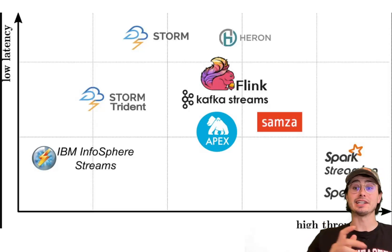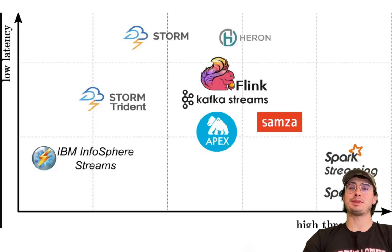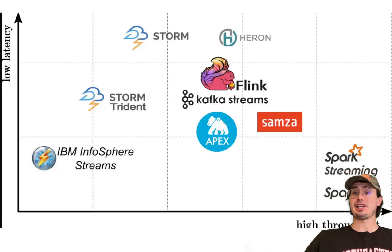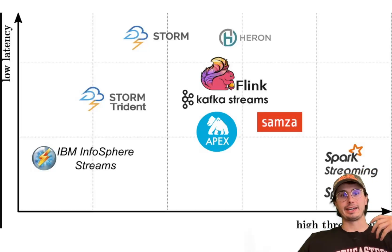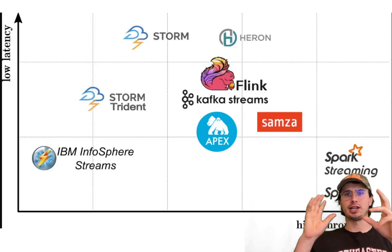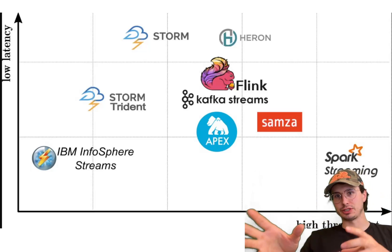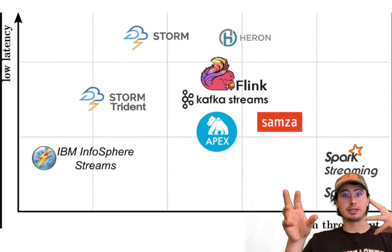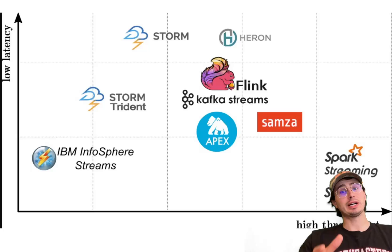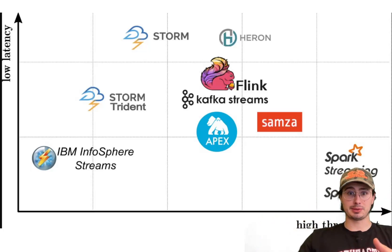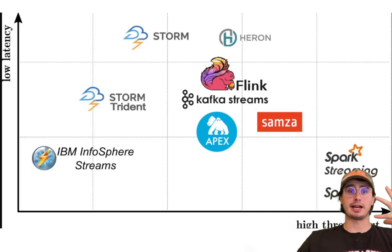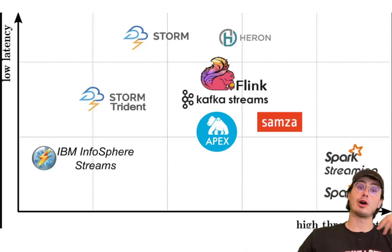Hey y'all, Data Guy here. Today I have a guide video that was a viewer request — expanding my comparison of Apache Flink and Apache Kafka to also include Spark and Storm as well. I'm going to do this in a similar structure: first going over the architectural overview of how these four tools are deployed, then talk about how you develop with each of them.